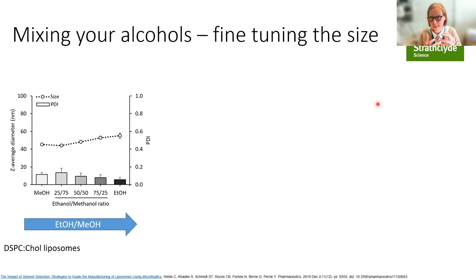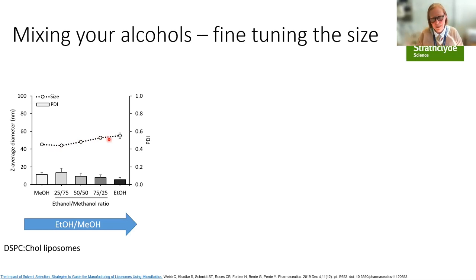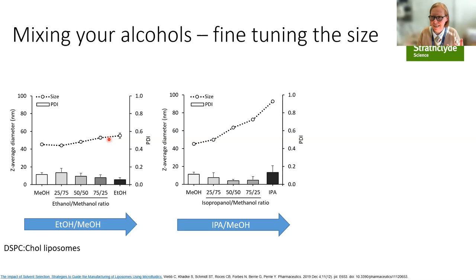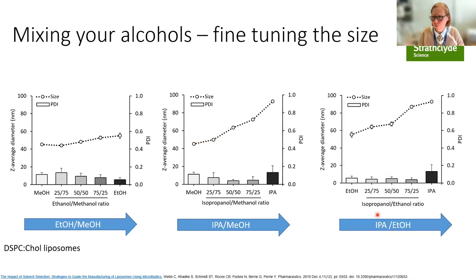We explored controlling size further by mixing alcohols — a popular thing in Scotland. By blending methanol and ethanol you get liposomes roughly the same size at 40–50 nm. But our IPA gave us large vesicles around 90 nm. By blending methanol with IPA at various ratios we can really control particle size, and our PDI stays nice and low — confirming it's not aggregates but actually different vesicle sizes. Blending ethanol and IPA similarly gives size control with low PDI.